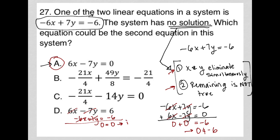This is what infinitely many solutions look like, right? So if the question had asked, which one gives you infinitely many solutions? It's when x and y cross out and what's left over is true. So that's the differentiation.